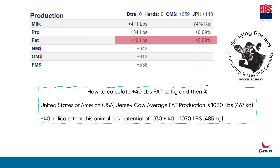To calculate fat for Romeo bull, you add plus 40 because the sign is positive — if it were a minus, you would subtract it from the average value. So 1,030 plus 40 equals 1,070 pounds, which is equivalent to 485 kilograms. That means the daughters of Romeo bull have the potential to produce 485 kilograms of fat in one lactation, which means farmers can make 485 kilograms of ghee from this milk.